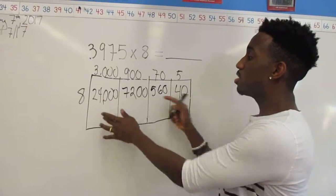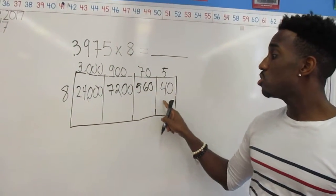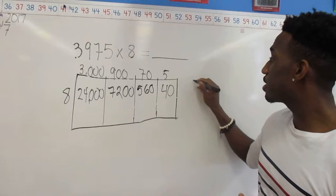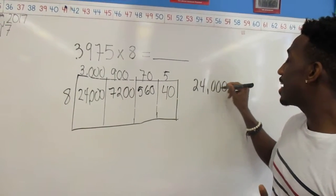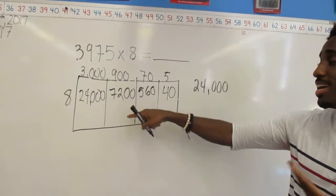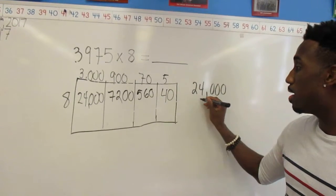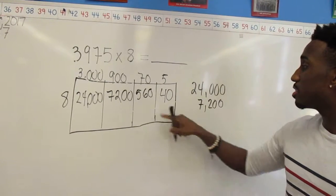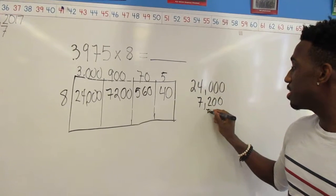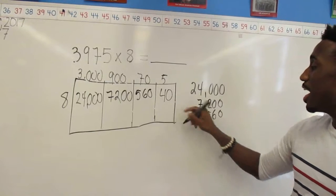Each of these numbers are called partial products. So now I'm going to add up my partial products. I have 24,000. And as I line them up, I'm going to make sure that I add them up based on place value so I don't make any mistakes: 560, lining it up, and lastly, 40.